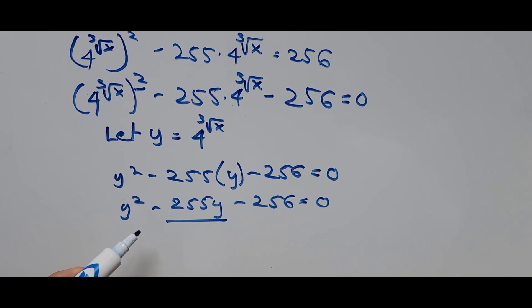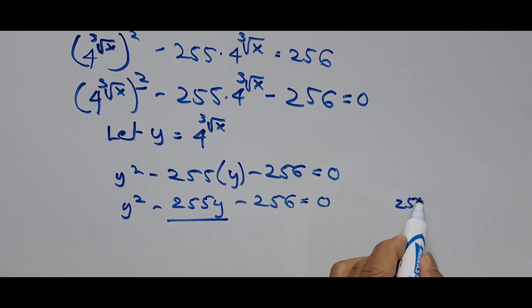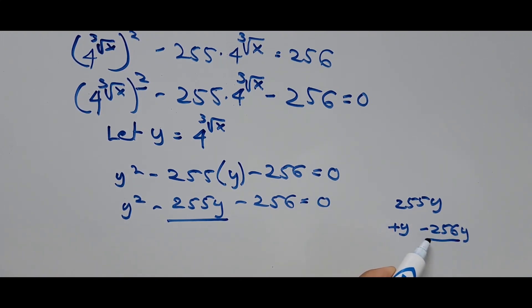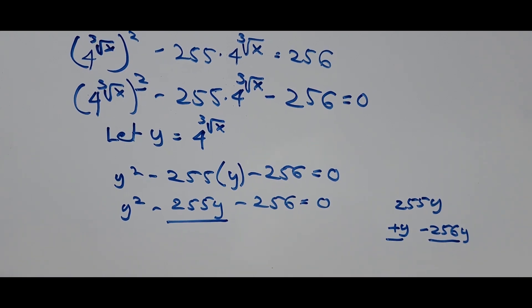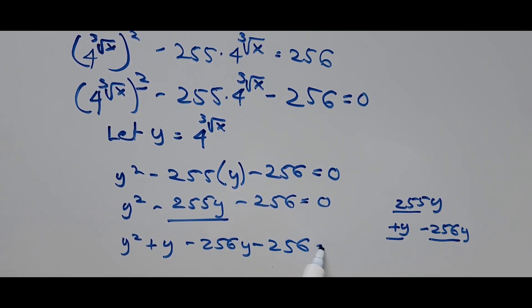This is simply written as y squared minus 255y minus 256 equals 0. From here we are tweaking the value of the middle term, 255y, and this 255y can be expressed as plus y minus 256y. Since the sign of the middle term is negative, the bigger value takes the negative sign and the smaller value takes the positive sign. And if you add these up, that will turn out to be 255, since 256 minus 1 is 255. So substituting that into the middle term: y squared plus y minus 256y minus 256 equals 0.